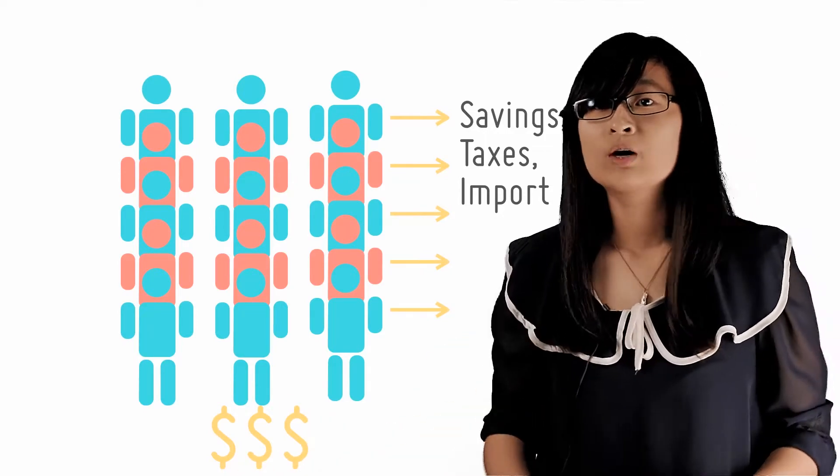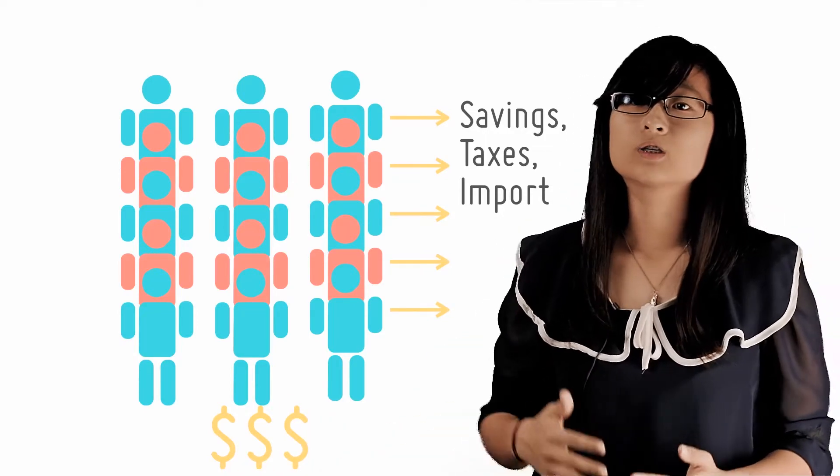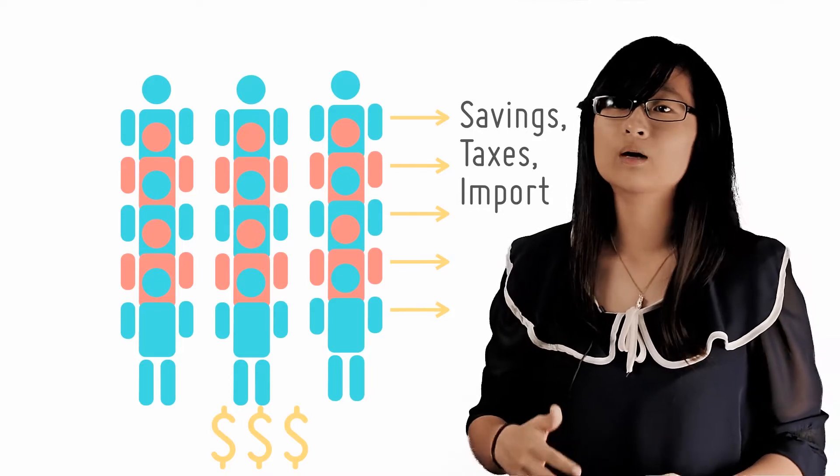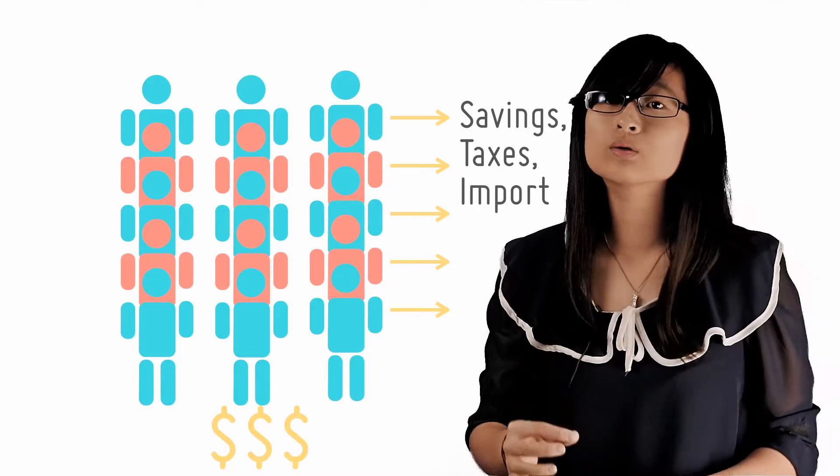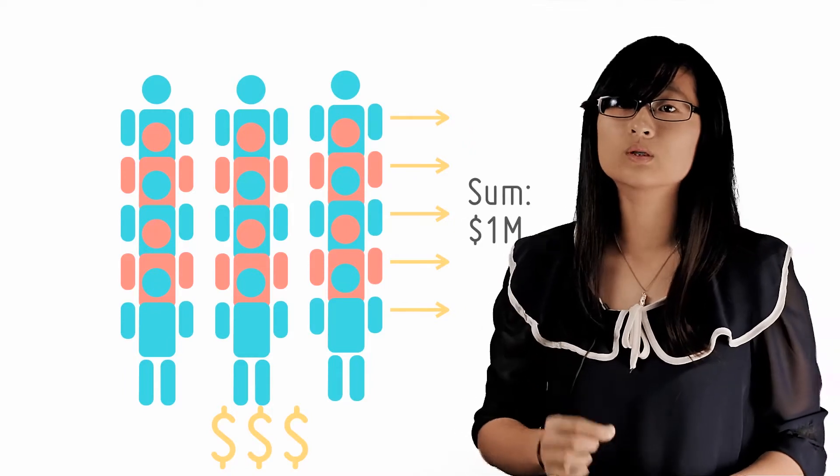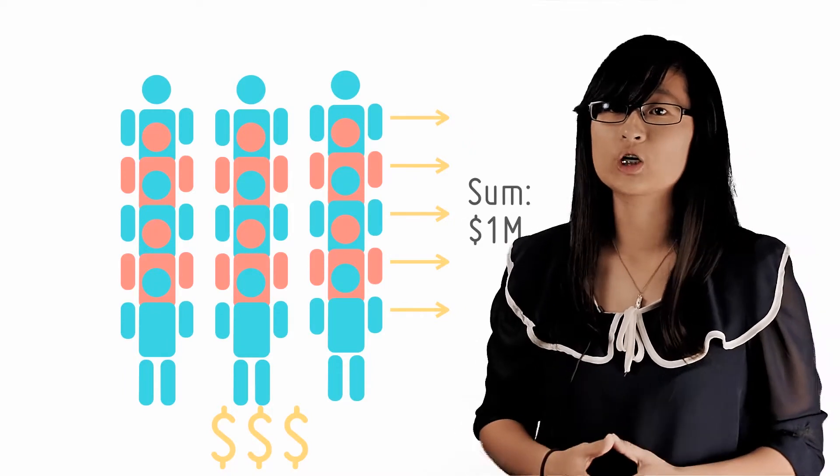Much like friction on a moving object, this causes the multiplier effect to slow down eventually and the cycle will come to a stop when the sum total of all the leakages equals the initial one million dollar injection.